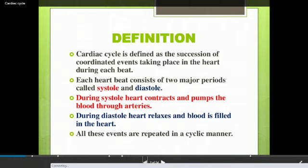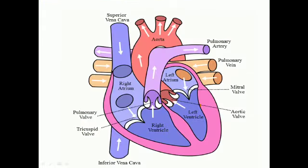Contraction of the heart is termed as systole and the relaxation of the heart as diastole. Now, with the help of a figure, we will try to understand what is systole and what is diastole. We consider the contraction and relaxation of the heart in terms of the ventricle chambers, which are the larger and thick-walled chambers as compared to the auricles.